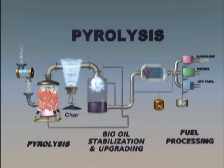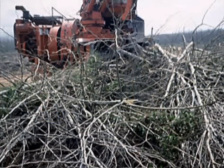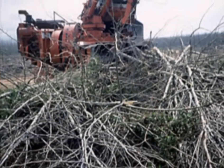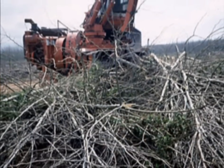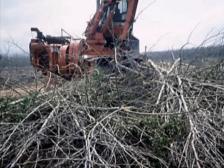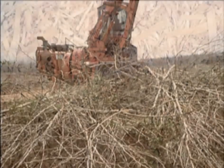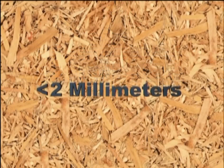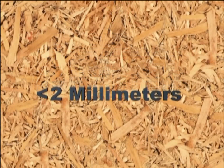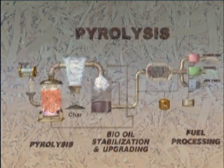Here's one example of a pyrolysis conversion process. Wood material, such as forest residue, is a common feedstock for the pyrolysis process. For best results, feedstock particles are less than 2 millimeters in size and have less than 10% moisture content by weight.